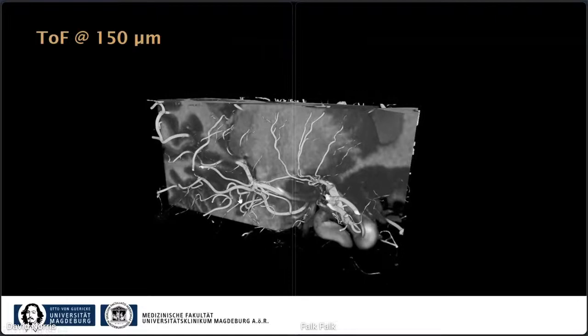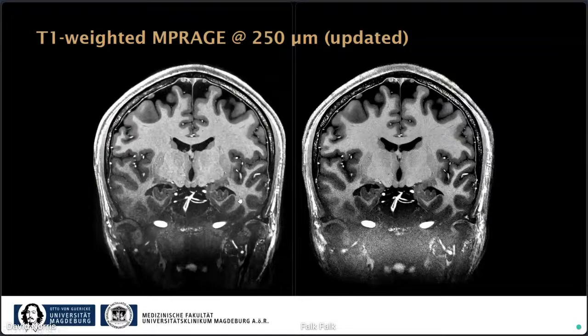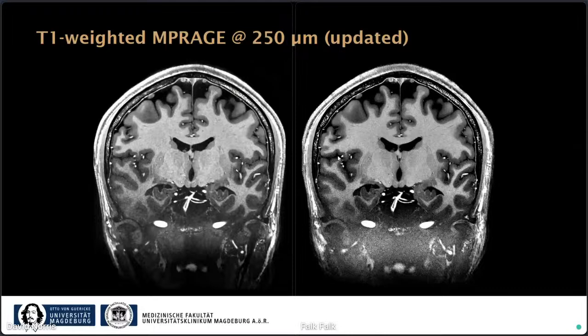Beyond the TOF, we also updated the 250 micron structural data because the original image looked a bit blurry and we were not satisfied. We updated it by changing the interpolation and registration methods for all eight volumes, and because the SNR visually decreased I also implemented denoising during reconstruction. With slight filtering we arrived at the updated version on the right, which has similarly high SNR but is considerably sharper.